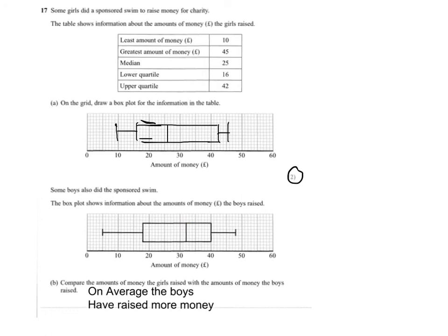The second point we need to look at is how spread out the scores were. You've got slightly more spread in the interquartile range for the girls, and slightly more spread overall for the boys. So I'll use the interquartile range — the interquartile range for the girls is larger than for the boys.